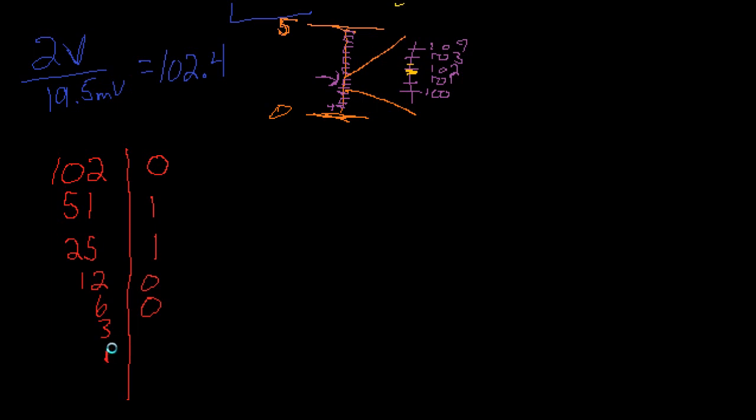0 has a remainder of 1. Now the trick to this, remember, is you read this number from bottom to top. So we can say 102 in base 10 is equal to...